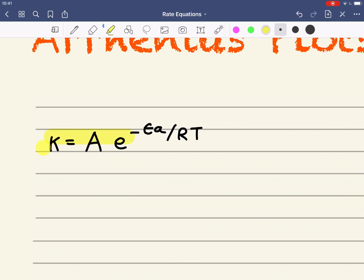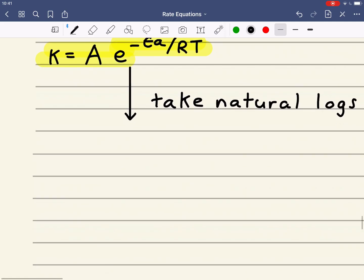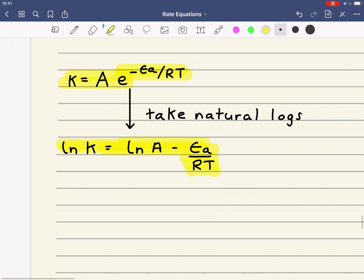This is what we call the exponential form of the Arrhenius equation. In order to do an Arrhenius plot, we need to get what we call the log form of this equation. So I'm going to take natural logs of this, and that will give us the following equation, which is another equation which will be given in your exam. So this here we call the log form of the Arrhenius equation.